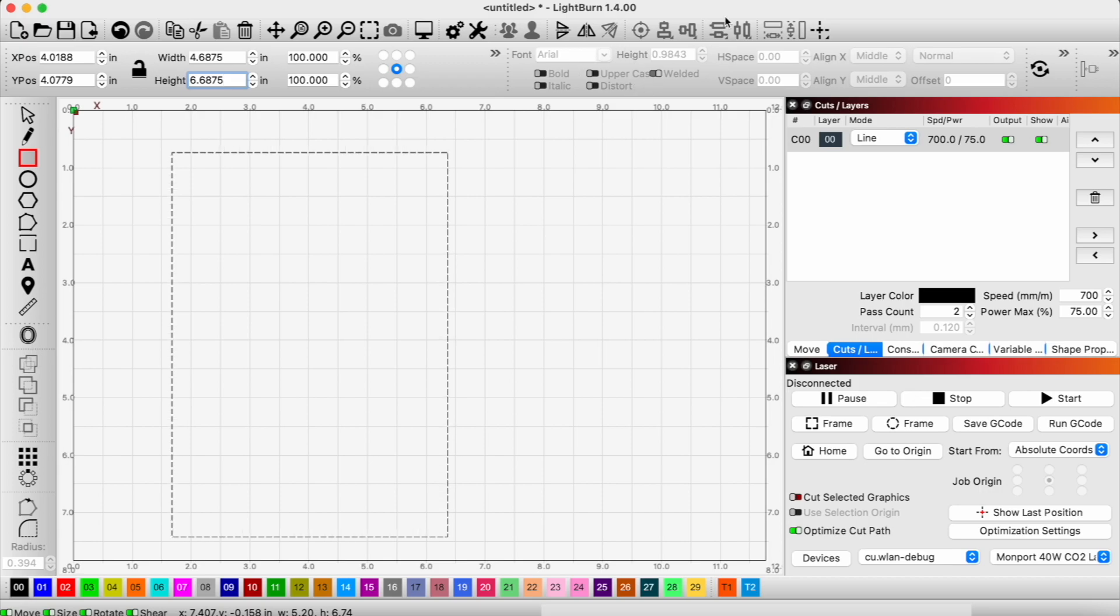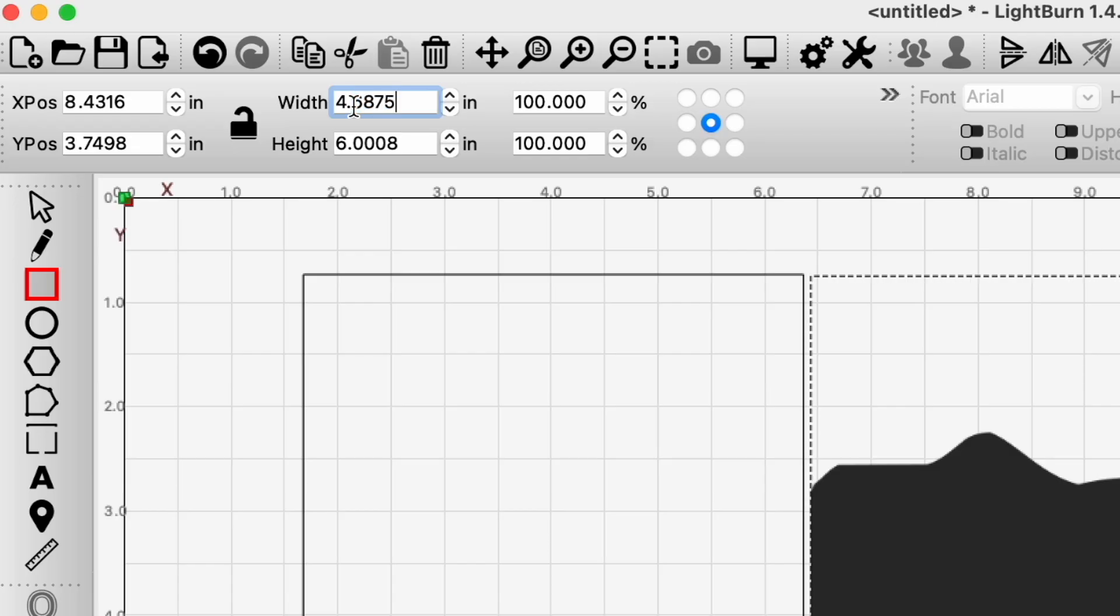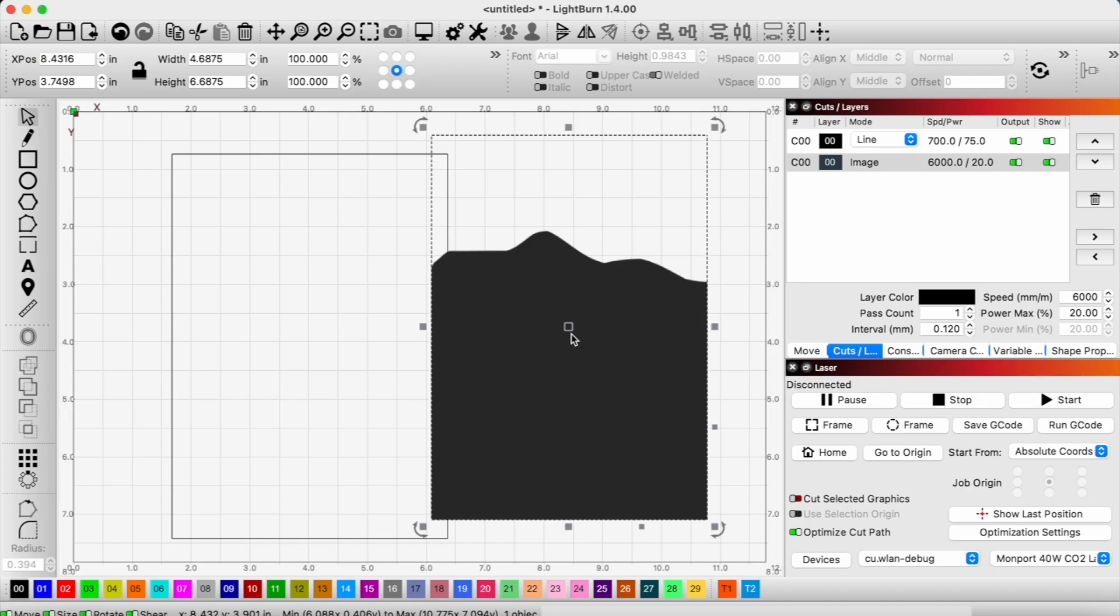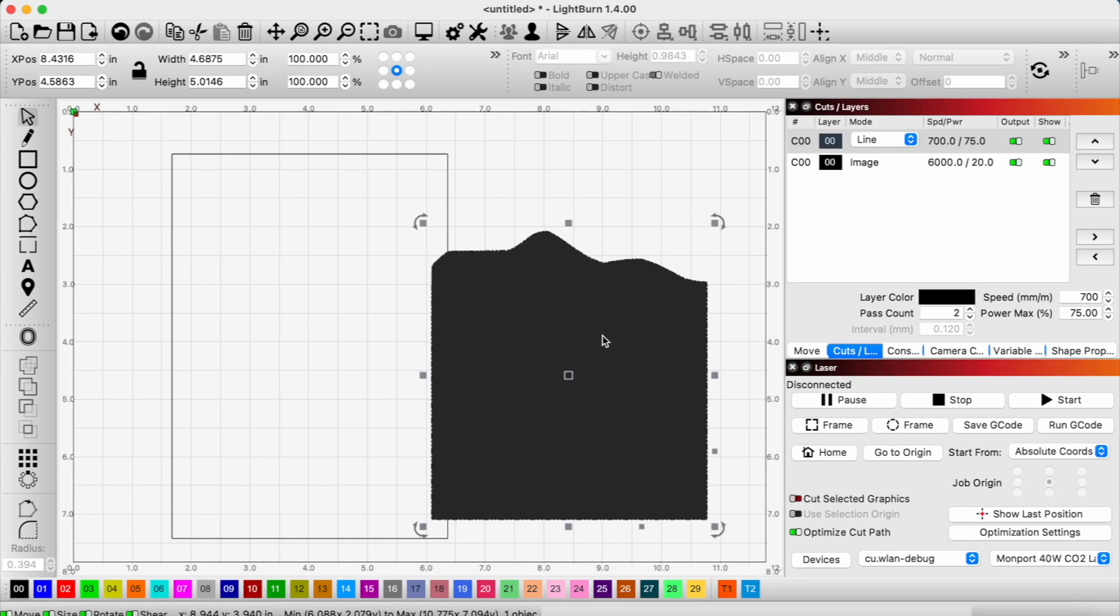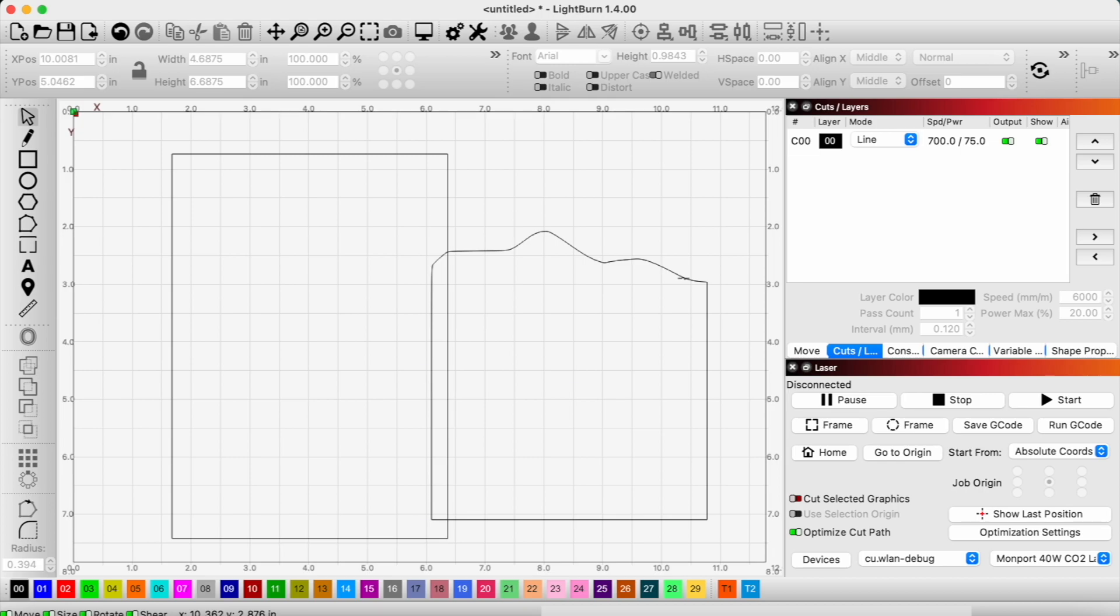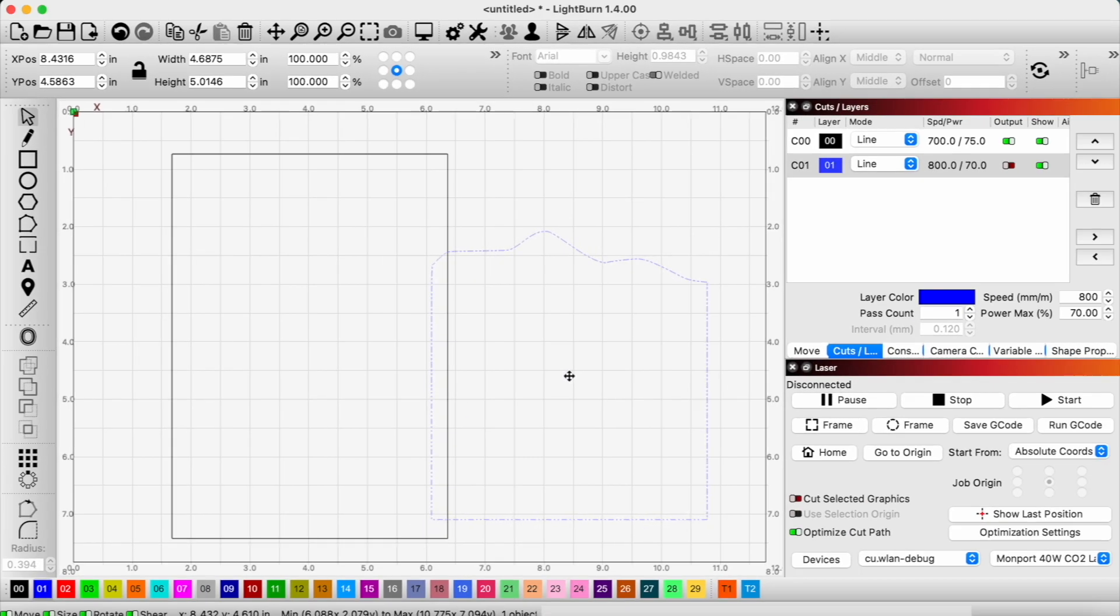And now that we have that, we're going to import our first layer and we're going to resize this. Now what we can do is trace this image, get rid of the image, and now our tracing, what we're going to do is put it on another layer, and then we can start stacking them on top of each other.